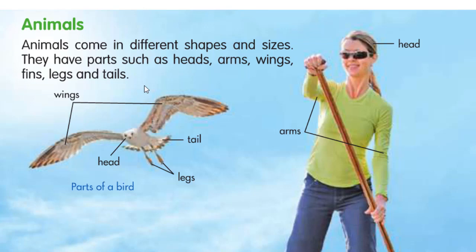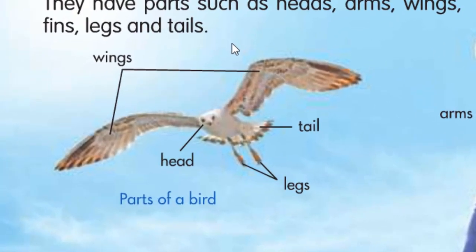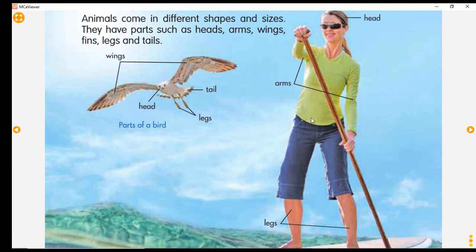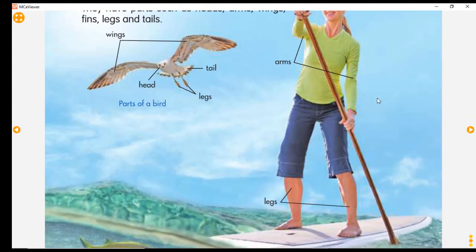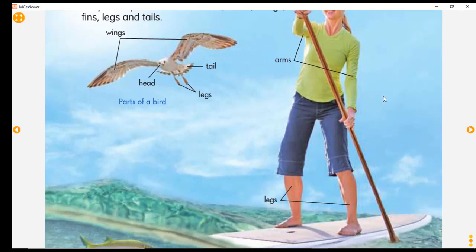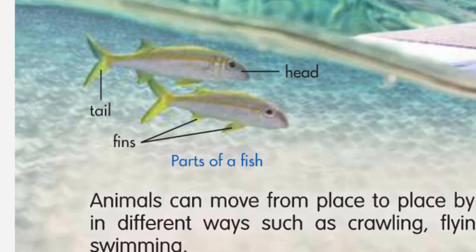Jadi tidak semua animals itu memiliki bagian-bagian ini. For example, look at the bird. Bird itu memiliki wings, head, tail, and legs. Tapi bird tidak memiliki fins, tidak memiliki arms juga. Jadi tidak semua animals itu memiliki semua bagian. Look at this — we have a human. Human di sini memiliki head, arms, tidak memiliki wings, tapi ada legs. Tidak memiliki tail dan juga fins. Sedangkan fish memiliki head, tail, and fins — sirip. Fins is sirip.